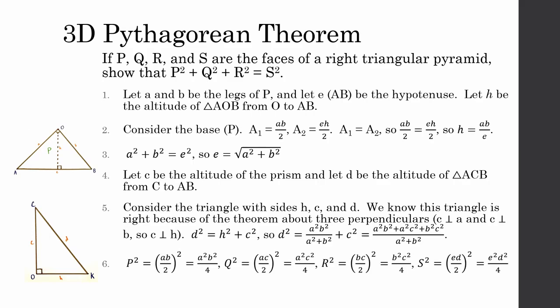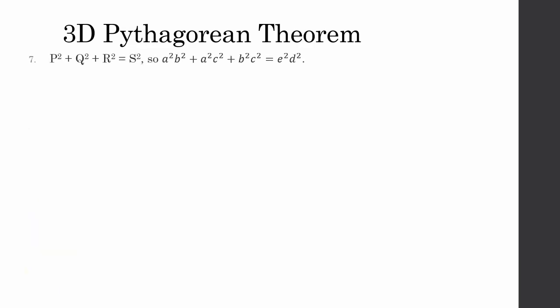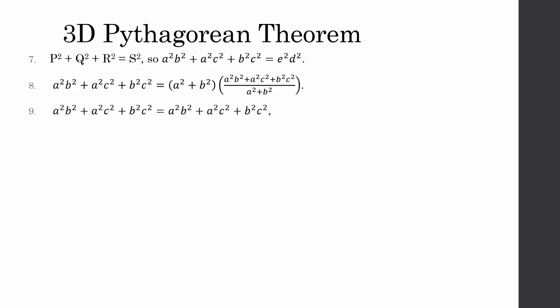The area of each of the prism's faces is given by their side lengths: P squared equals A squared B squared over 4, Q squared equals A squared C squared over 4, R squared equals B squared C squared over 4, and S squared equals E squared D squared over 4. To show that P squared plus Q squared plus R squared equals S squared, A squared B squared plus A squared C squared plus B squared C squared should equal E squared D squared. Finally, substituting for E squared D squared in terms of A and B leads to A squared B squared plus A squared C squared plus B squared C squared equals A squared B squared plus A squared C squared plus B squared C squared. Therefore, P squared plus Q squared plus R squared equals S squared, proving the three-dimensional Pythagorean theorem.